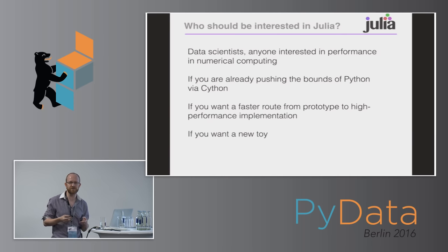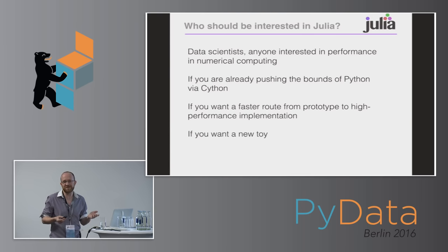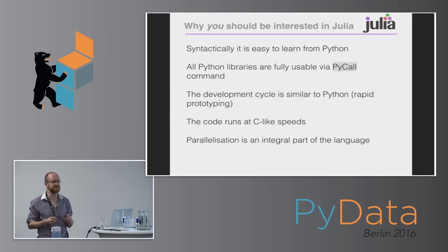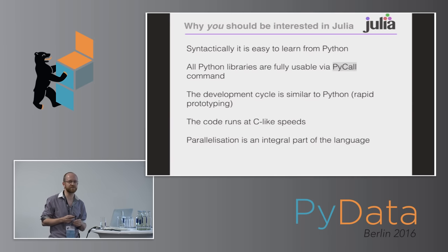Compared to MATLAB, which would be one of the big competitors, Julia is many orders of magnitude faster. If you're a Python user already pushing the bounds using Cython, it's probably of interest to you. For me personally, it's this fast route from prototyping to high-performance implementation that was particularly attractive. Syntactically, it's very easy to learn from Python — the syntax is quite similar. The numerical processing and equation writing is closer to MATLAB in some ways, but the programming side is closer to Python in look and feel. So it should be quite learnable for most of you.